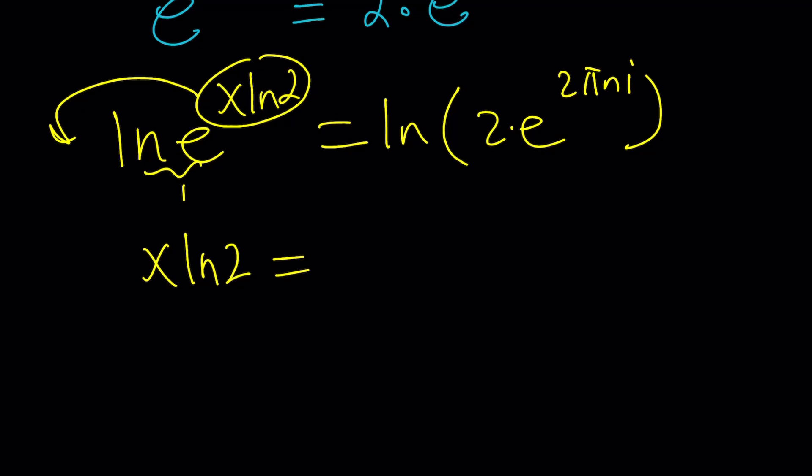Now, this is a product. How do you ln a product? In fact, hopefully, you do know that ln of a times b can be written as ln of a plus ln of b. Right? Okay.